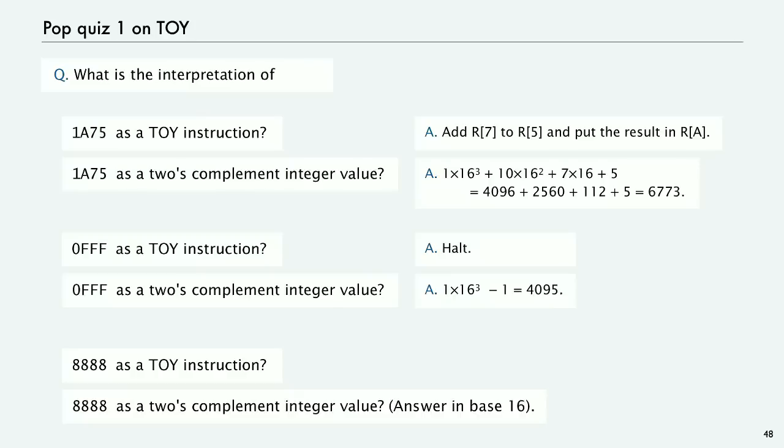8888. Well, 8 is load instruction. Next 8 means register 8. And 88 means memory location 88. And as a 2's complement integer value, well, you can do it by converting to binary and so forth and converting back.